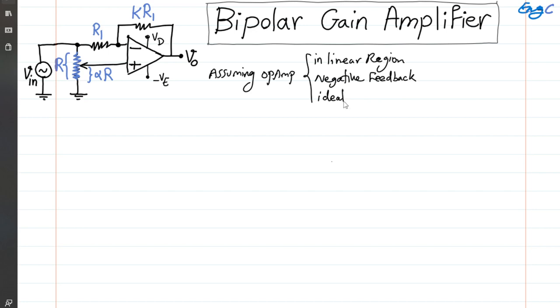By ideal op-amp, I mean the input impedance for the two terminals, positive and negative, is infinite. For open-loop op-amp, the gain is infinite. With ideal op-amp assumed, we conclude that virtual short holds, which means the voltage at the positive terminal equals the negative terminal.